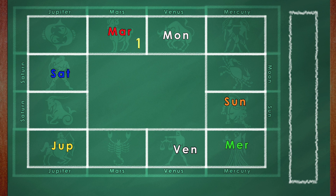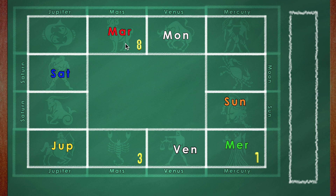How is the relationship between Mars and Mercury? Mercury owns the 3rd and the 6th from the Mulatrikona of Mars, and that makes Mercury the enemy of Mars. But look at it from the other side — how does Mercury look at Mars? From Mercury, Mars owns the 3rd and the 8th house. The 8th house makes Mars its friend, whereas the 3rd makes Mars its enemy. Therefore, by one rule friend and by another rule enemy. Therefore Mercury treats Mars as its neutral.